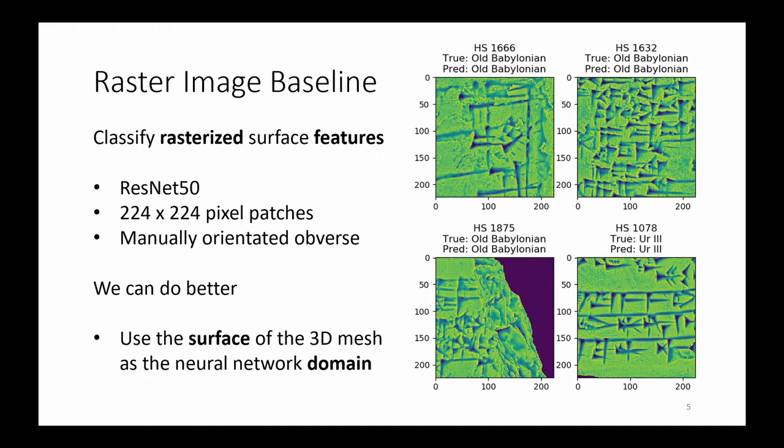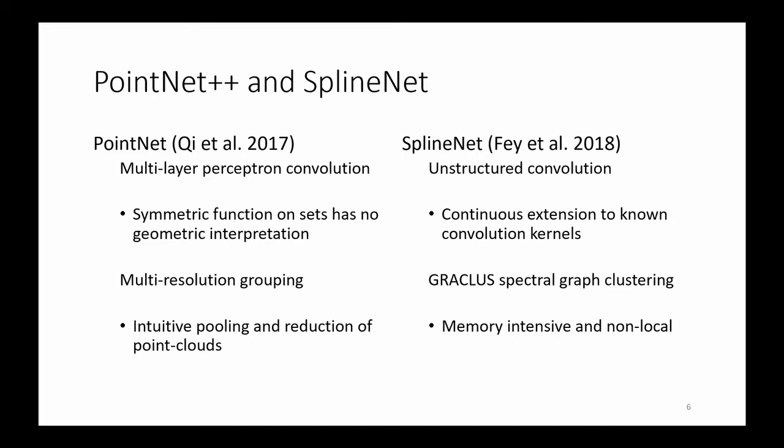The training depends on proper orientation of the tablets in three dimensions. HiQbeta provides manually orientated tablets with script facing forward and leveled horizontally. We can avoid this manual orientation step if we learn directly on the native domain of the data, the 3D manifolds. There are many different approaches to geometric learning. Two approaches are of interest here: PointNet and SplineNet.